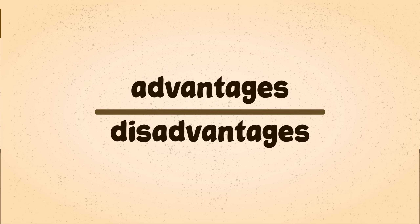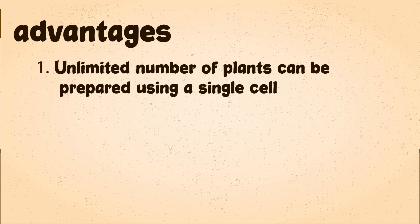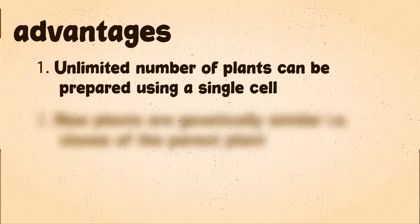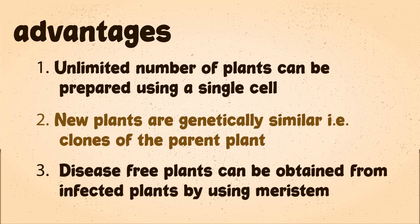Now let's discuss some advantages of micropropagation. An unlimited number of plants can be prepared from a single cell. The new plants are genetically similar — that is, clones of the parent plant — and thus will maintain the hybrid character. Disease-free plants can also be obtained from infected plants by using apical meristem as the explant.